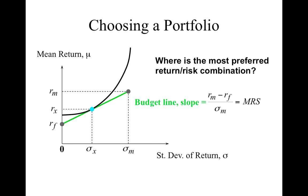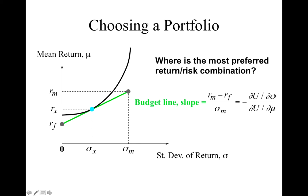At the optimal point, the slope of the indifference curve equals the slope of the budget line. We know the budget line slope is (R_m − RF) / σ_m. The slope of the indifference curve is the marginal rate of substitution — the ratio of marginal utilities: how much utility changes if standard deviation increases by one unit, divided by how much utility changes if the mean rate of return increases by one unit.